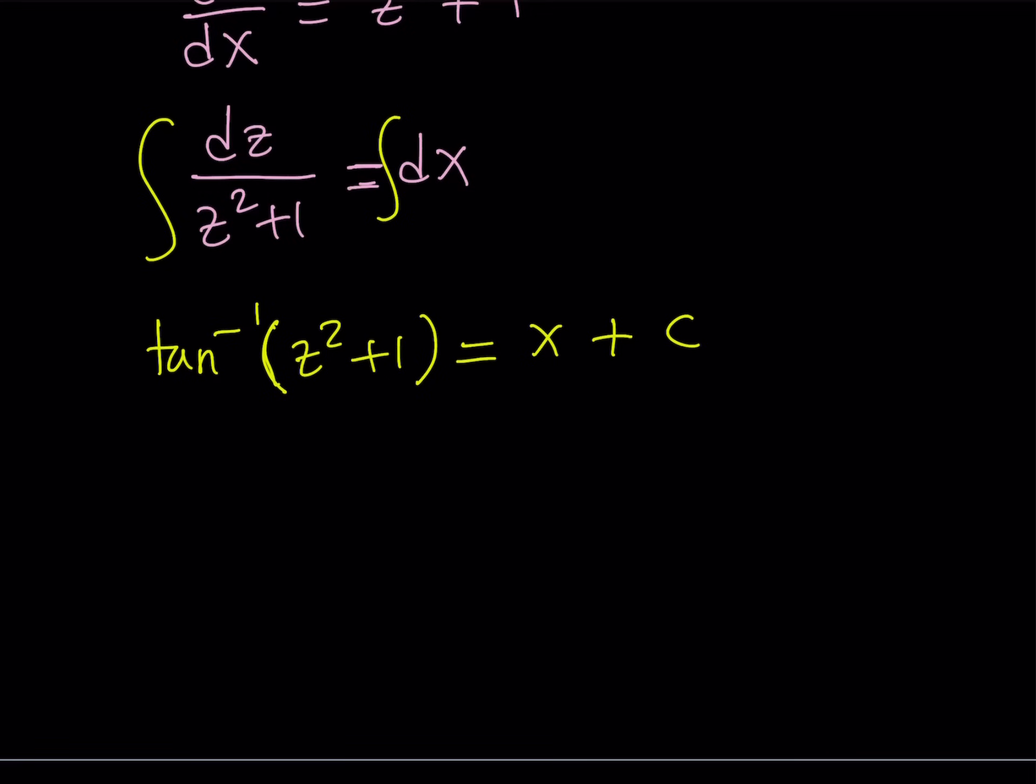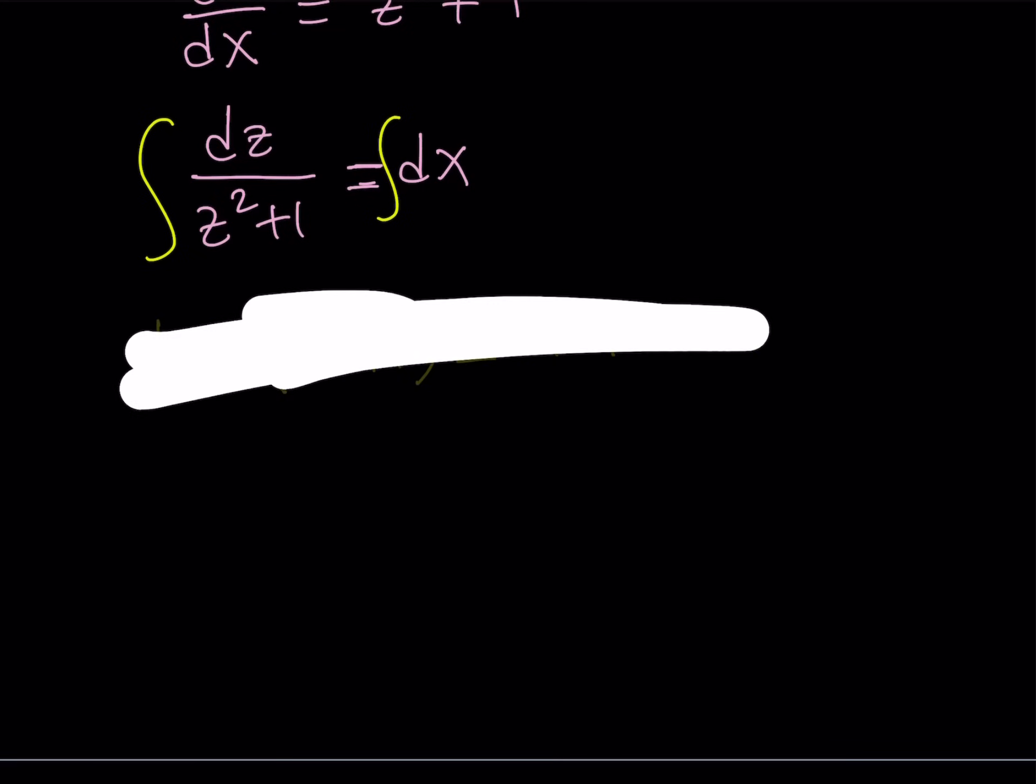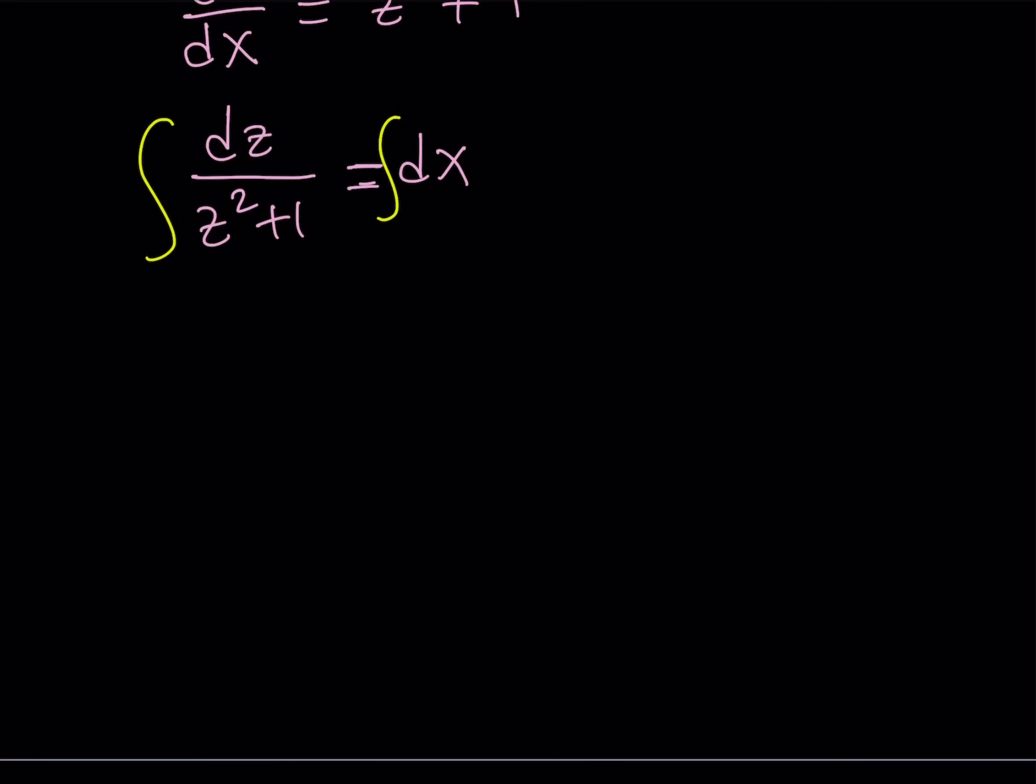Now, obviously, we want to back-substitute everything, so let's go ahead and use the tangent relationship here to turn this into something nicer. I messed up here. I just realized. So the integral of one over z squared plus one is not tan inverse z squared plus one, it's tan inverse z. So tan inverse z is equal to x plus c. Here we go. Now we're going to tangent both sides, and that's going to give us z equals tangent of x plus c.